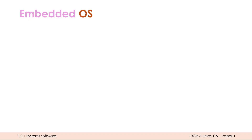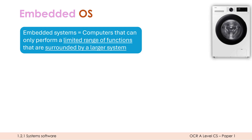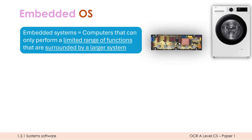The next type is the embedded OS. Some of these types do overlap — you could be both multitasking and embedded — but embedded systems tend to not have multitasking. An embedded system is a computer that can only perform a limited range of functions and is surrounded by a larger system. A classic example is a washing machine; inside it is a small embedded computer specialized for washing clothes.